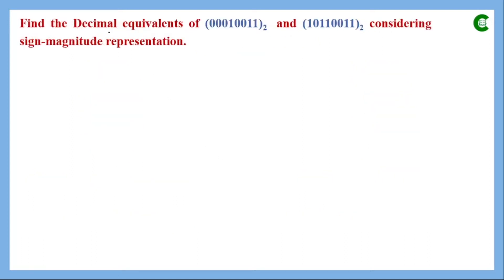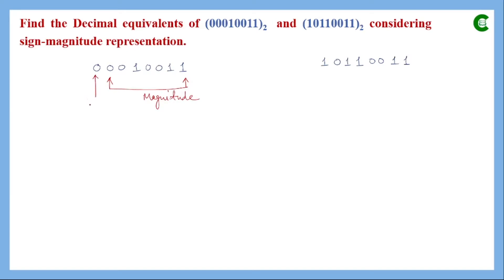The next problem asks us to find the decimal equivalent of given binary representations in sign-magnitude form. We have two 8-bit numbers. In the first number the MSB is 0, which signifies it is a positive number. In the second number the MSB is 1, which signifies the number is negative. The remaining 7 bits in each represent the magnitude.